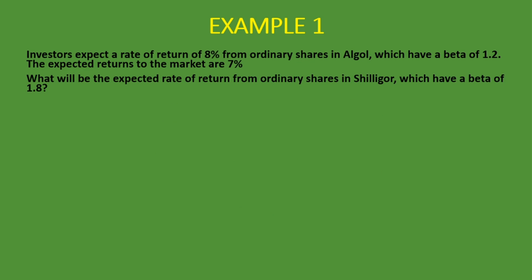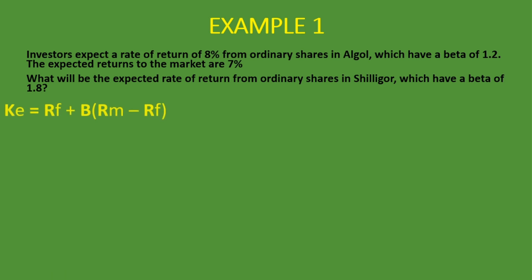Let's look at the second example. This is where many students ask questions about how to find the missing figure, and here we're just going to use mathematics to do that. We are told that investors expect a rate of return of 8% from ordinary shares in Algol, which have a beta of 1.2. The expected returns to the market are 7%. What will be the expected rate of return from ordinary shares in Shiligo, which have a beta of 1.8? The formula is: KE equals RF plus B, open bracket, RM minus RF.